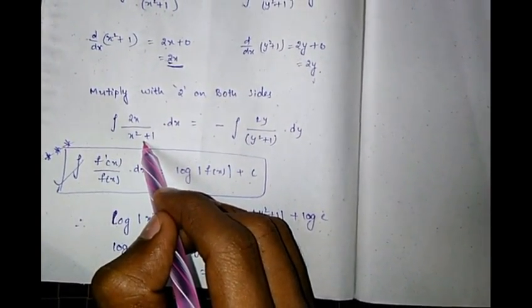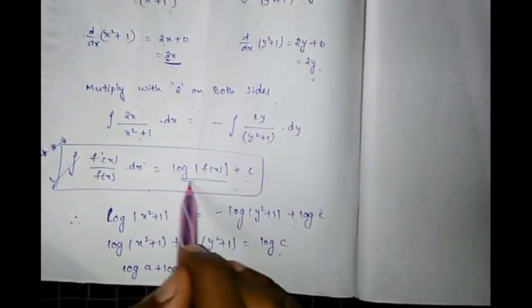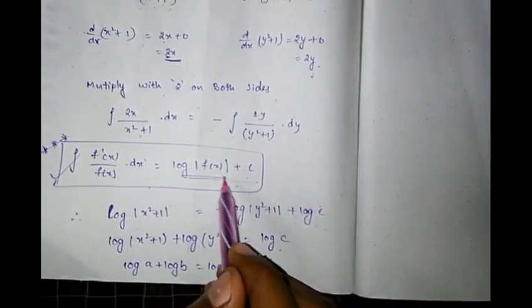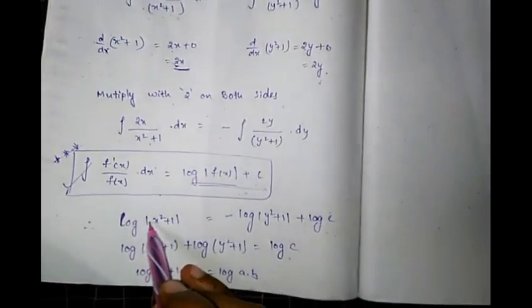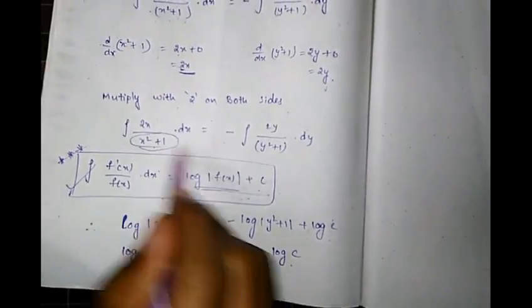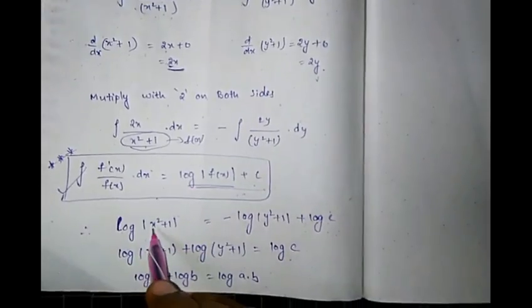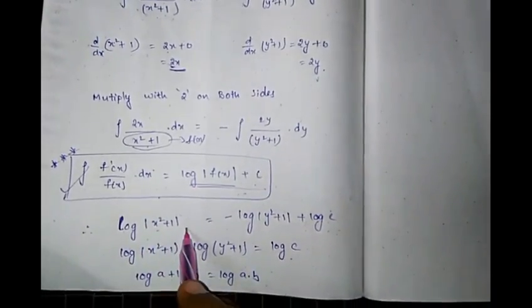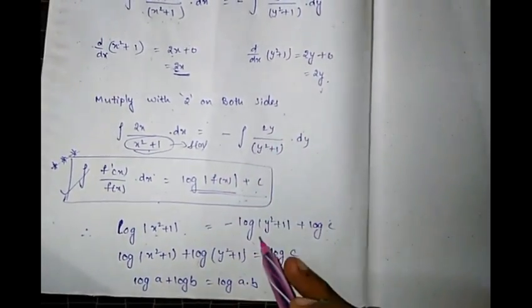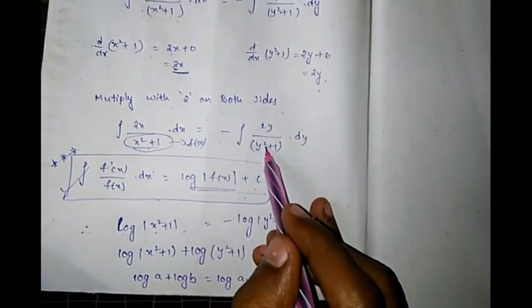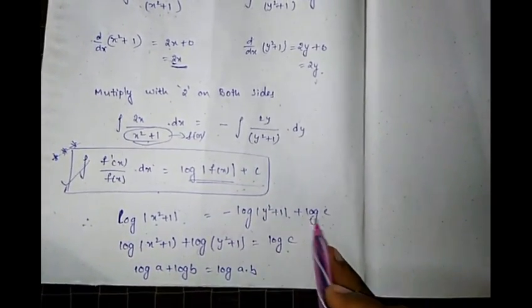Applying the formula log|f(x)| + c: we get (1/2)log|x²+1| = −(1/2)log|y²+1| + c. Moving terms gives log|x²+1| + log|y²+1| = log c.